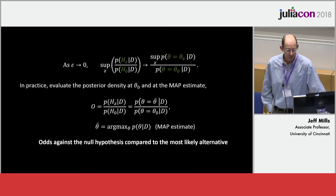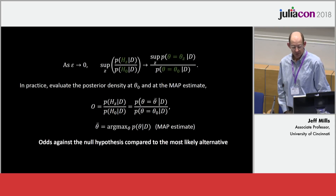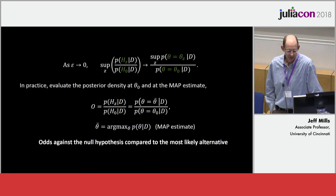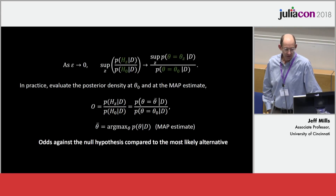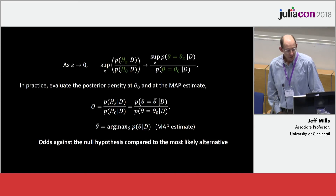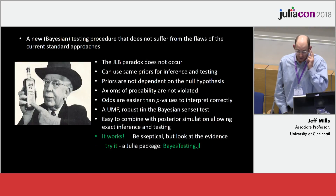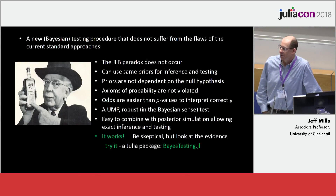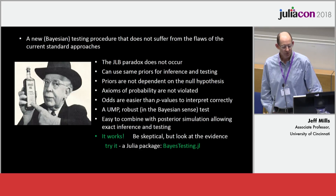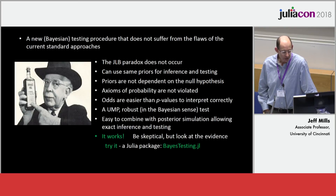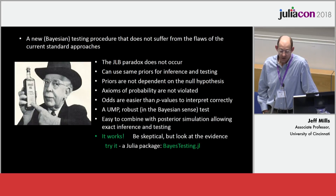As epsilon goes to zero for those regions, we end up with a posterior odds ratio that is just the height of the density at the posterior mode — the maximum a posteriori estimate, which is the Bayesian equivalent of a maximum likelihood estimate — divided by the value of the posterior at the null hypothesis. This gives us the odds against the null compared to the most likely alternative. When we do this, the Jeffreys-Lindley-Bartlett paradox goes away, we can use the usual priors for inference, and in Julia we can easily make use of posterior simulation for both exact inference and testing.